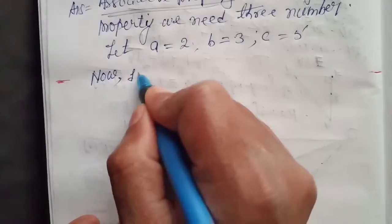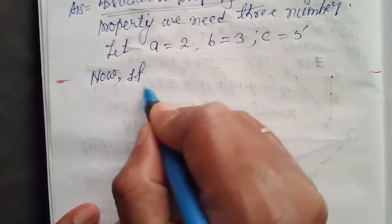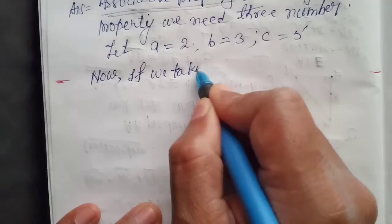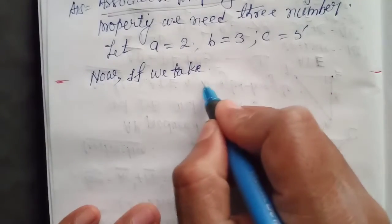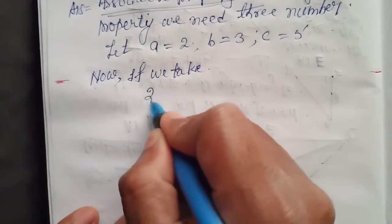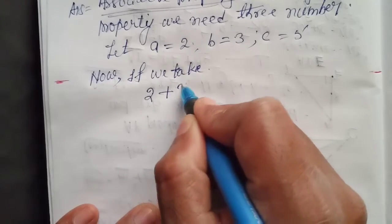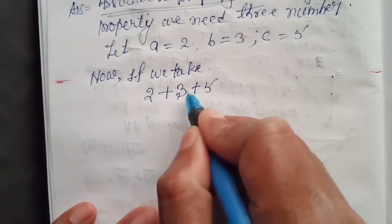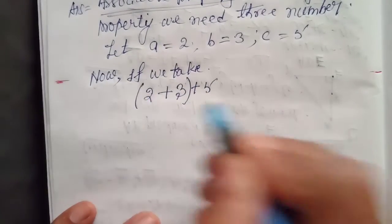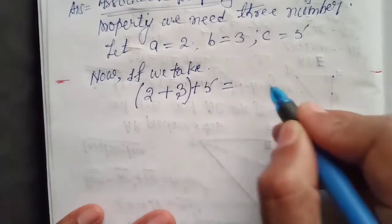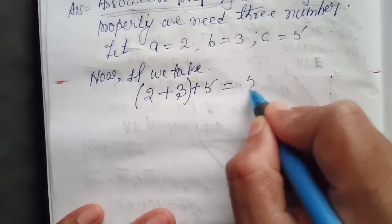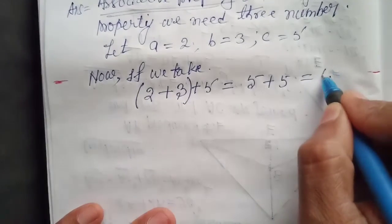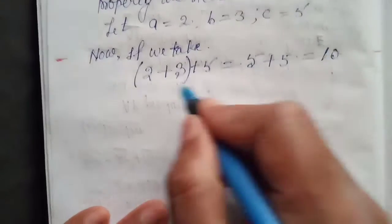Now if we take (2 plus 3) plus 5 with the bracket here, what is the result? The bracket gives us 5 plus 5, and the answer is 10.